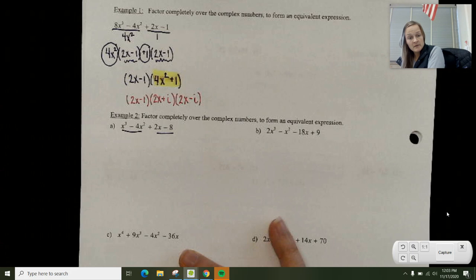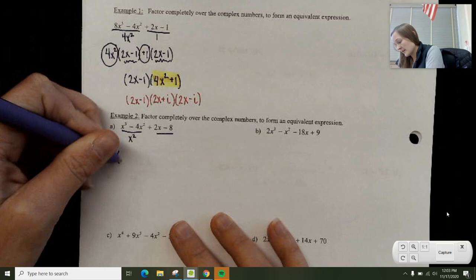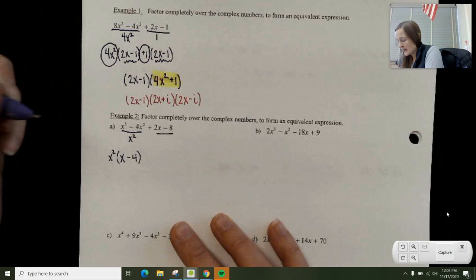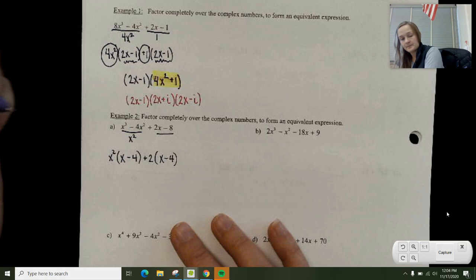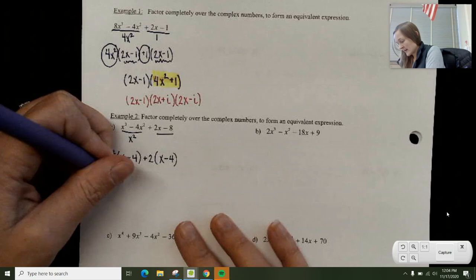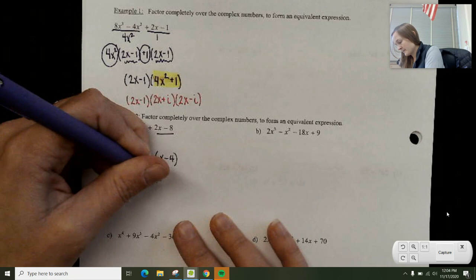The first thing I look at is grouping the front 2 and the back 2. Out of the front 2, I can take out x². And when I take out x², I'm left with x - 4.